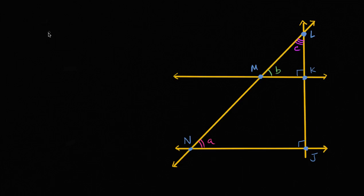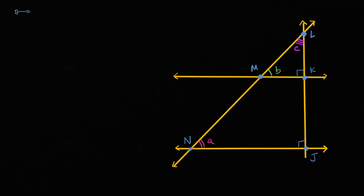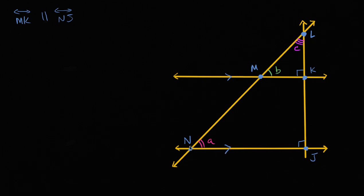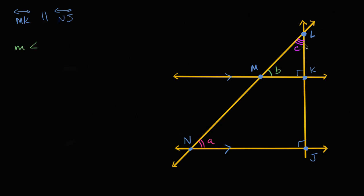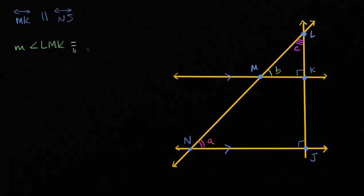We have an interesting looking diagram. We know that line mk is parallel to line nj — so this line is parallel to this line. Given that and all the other information on this diagram, I'm hoping to prove that the measure of this angle right over here, lmk, is equal to the measure of this angle right over here, which we could call angle lnj.